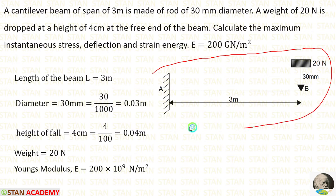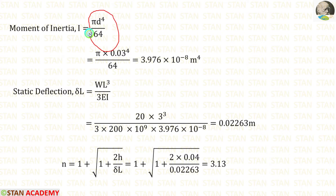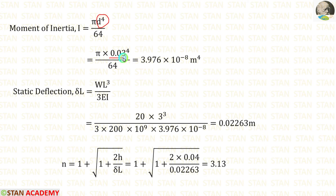We can make the diagram. The length is given as 3 meter and the height of the fall is 30 mm. Now let us calculate the moment of inertia. In the question, a circular section is given. The formula for moment of inertia is pi d power 4 by 64. The diameter is 0.03 meter. After calculations, we get 3.976 into 10 power minus 8 meter power 4.